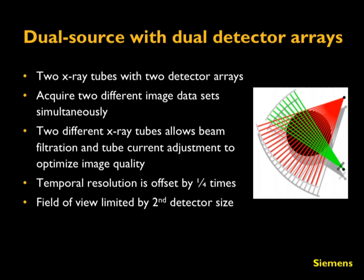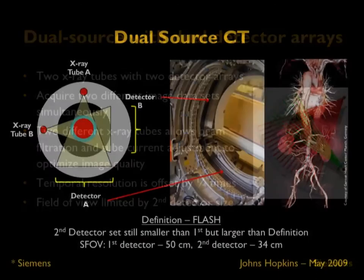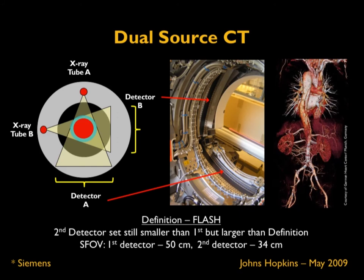One current limitation of this system is that the second detector array is slightly smaller than the primary detector array, resulting in a slightly limited field of view for dual-energy CT acquisition. Shown here is an inside photograph of the CT gantry with two detectors positioned 90 degrees opposite the two x-ray tubes. A key advantage is that each tube can be set at a separate tube voltage, automatically obtaining two x-ray beams of different energies.